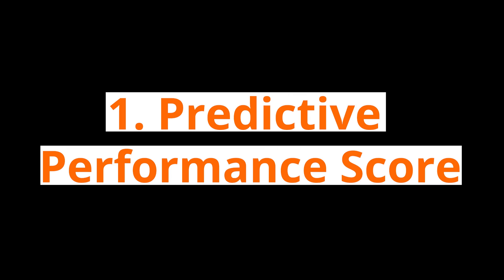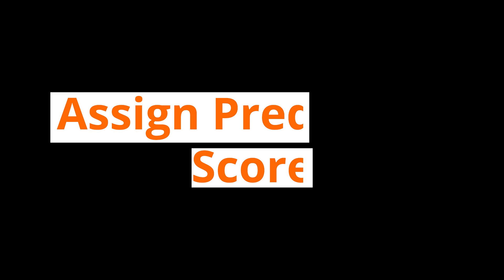I really like these three features about Anyword that set it apart from any other AI copywriting tool — I didn't see these three features anywhere else. The first is predictive performance score. It shows the effectiveness of each copy even before a campaign actually runs, and can assign a predictive score to each copy, helping you save dollars on needless A/B testing.